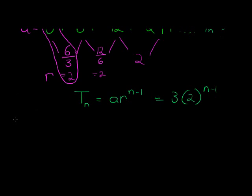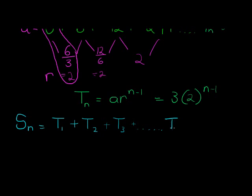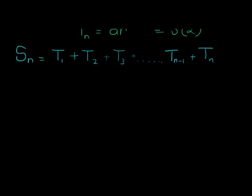Now, what if we want to add up the terms? The notation we use is S_N, which is the sum of the first N terms: term 1 plus term 2 plus term 3, all the way up to the N minus 1 term (the second last) and term N. Let's replace these T's with the actual geometric representation.